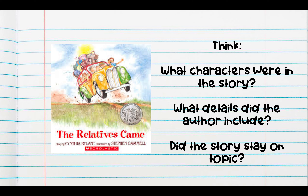And then, did the story stay on topic? What I mean by that is, if the story is about the relatives coming to visit, they probably wouldn't be talking about going grocery shopping at Walmart and going to the zoo to see an alligator. That doesn't really seem like what the family did when they came over. I think the author did a really great job of only focusing on what they did when the relatives came to visit. Sometimes our brains just get so excited to write that we forget that we need to stay on the same topic.